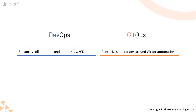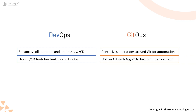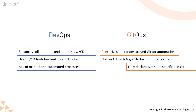Next, we have tools and workflows. DevOps utilizes CI-CD tools like Jenkins, CircleCI, or GitLab CI, along with tools like Docker and Kubernetes for streamlined deployment. GitOps uses Git along with deployment tools like Argo CD or Flux CD to automatically reconcile your infrastructure state. Regarding approach, DevOps often involves a mix of manual and automated processes, while GitOps relies entirely on a declarative approach, where you specify the desired state of the system in Git, rather than how to achieve it.